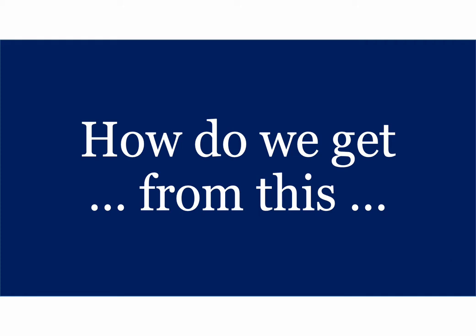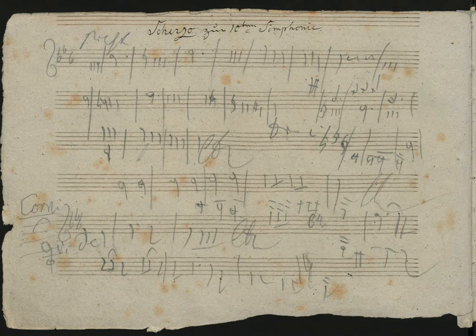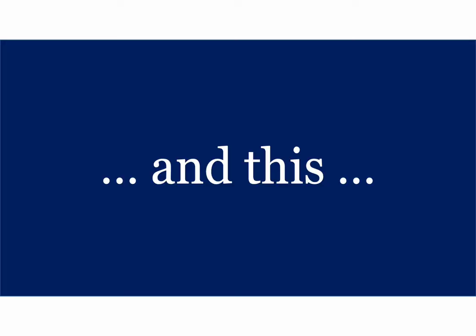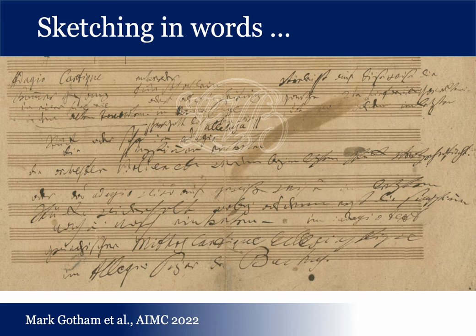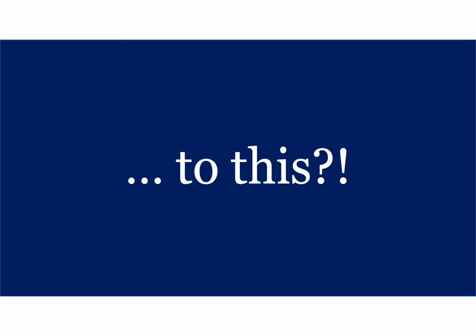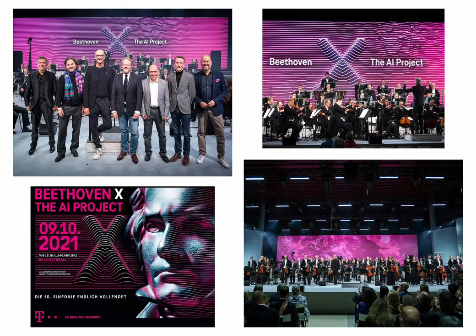How do we get from material like this — Beethoven's few clear musical sketches, and even more cryptically, material like this, his sketches in words — to the final performance which took place in October of 2021?